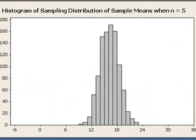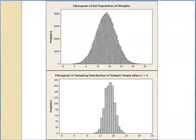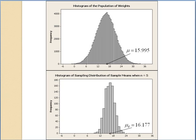This histogram represents the means of 1,000 random samples of size 5 taken from the 100,000 weights. Compare these two histograms. The means of both distributions are close to 16. This is what we expected because we know the sample mean is an unbiased estimate of the population mean. However, we can see the two standard deviations differ.